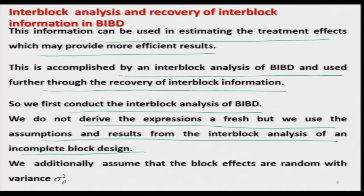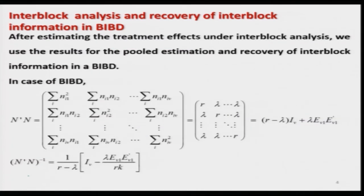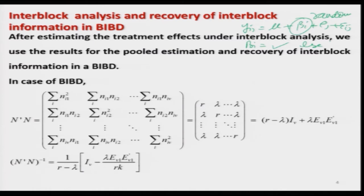We are making all the assumptions including that the block effects are random and have variance sigma_beta^2 in the two-way model. The model is y_ij = mu + beta_i + tau_j + epsilon_ij. From there, treating beta_i as random, you obtain the model in terms of block totals, apply the principle of least squares, and estimate the treatment effects — the same approach we had followed. After that, you combine the intra-block and inter-block estimates using the weighted arithmetic mean.